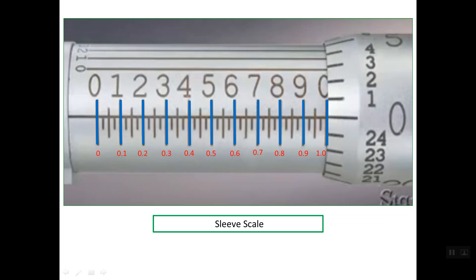Each one-tenth partition is divided into 4 equal divisions. So this value of 1 tenth of an inch is divided equally into 4 partitions. The value of 1 partition — which is the least reading on the sleeve scale — is computed by dividing 1 tenth of an inch by 4, which gives 0.025 of an inch. So the minimum reading on the sleeve scale is 0.025 of an inch.